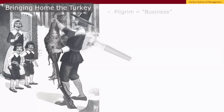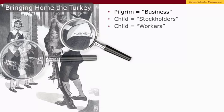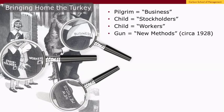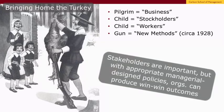The fourth and final view of the employment relationship is reflected in a piece of line art from the late 1920s called 'Bringing Home the Turkey.' The father pilgrim is labeled business, the children are labeled stockholders and workers, and crucially the gun that the father pilgrim is holding — representing business — is labeled new methods. Stakeholders are important — they're a family. But more importantly, it's not a joint initiative or a market-based initiative creating wealth; it's a business initiative, the gun representing new methods that is generating wealth. These are win-win human resources policies serving not only the organization's interests but creating enough wealth that stockholders and workers can share as well.